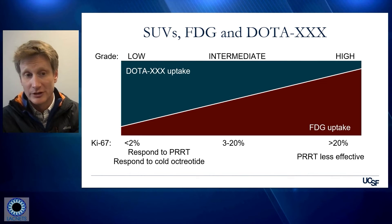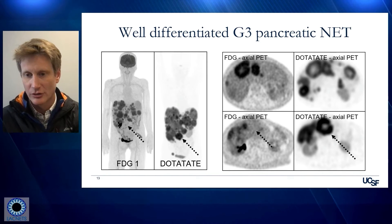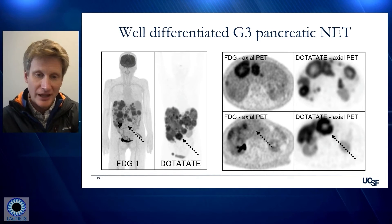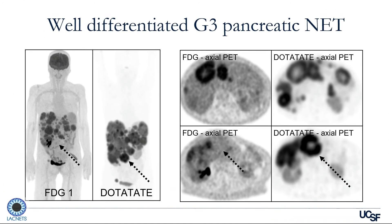PRRT will be less effective in higher FDG tumors, and those patients will progress more quickly. In some patients — particularly those with well-differentiated G3 pancreatic neuroendocrine tumors or other G3 NETs — the use of DOTATATE PET and FDG PET can be helpful to look for heterogeneous disease. In this patient, you can see a black arrow pointing to a lesion that's somatostatin receptor positive but FDG negative, while other lesions in the same patient are more FDG positive and somatostatin receptor negative. This is important because it's the FDG positive disease that drives treatment decisions. A clinician might say that FDG-avid lesion needs liver-directed therapy, whereas the somatostatin receptor positive disease would be treated with PRRT, allowing a more patient-specific treatment approach.